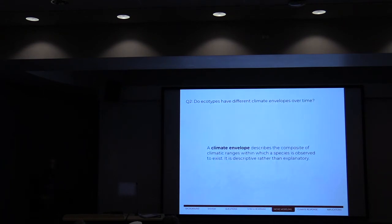Moving on to the next question, do ecotypes have different climate envelopes over time? We need to define what a climate envelope is, and how we're going to approach that. This is a modeling project. Climate envelope describes the composite of climatic ranges within which a species is observed to exist. And it's descriptive rather than explanatory. So it's not mechanistically saying where the species can be, just based on observation.